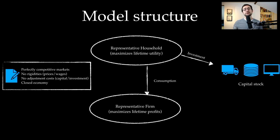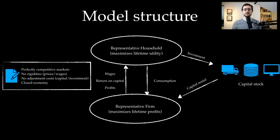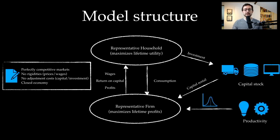The firm needs inputs to produce a good. It rents capital from the household and pays a rental rate, and hires workers from the household and pays a wage. As the firm is owned by the household, any profits go back as dividends to the household. And as there is no market power, there are actually no profits here. There are also stochastics in the model in terms of total factor productivity, which is driven by an exogenous process.